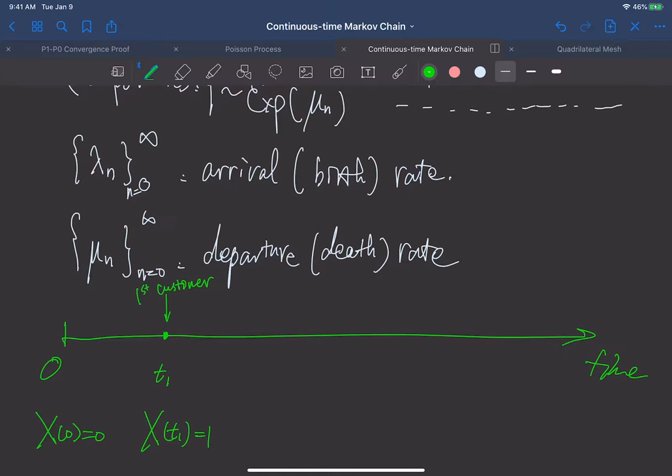And then, apparently, we may have something here. We have a second customer coming into the line. This is t_2. And now X(t_2) becomes 2.